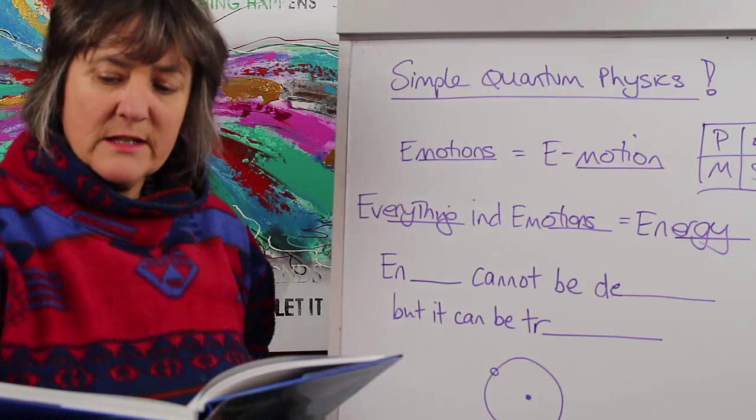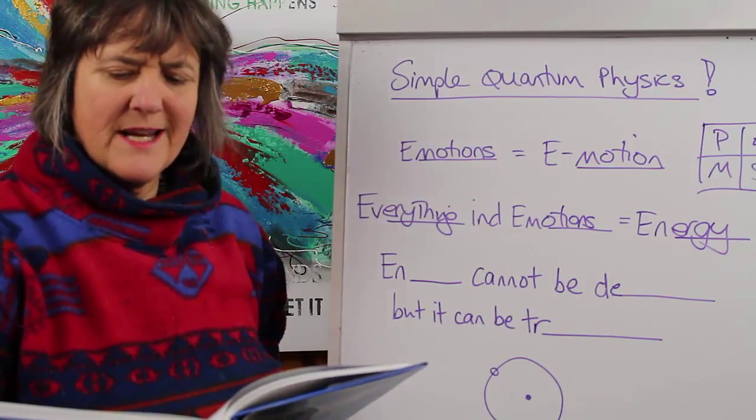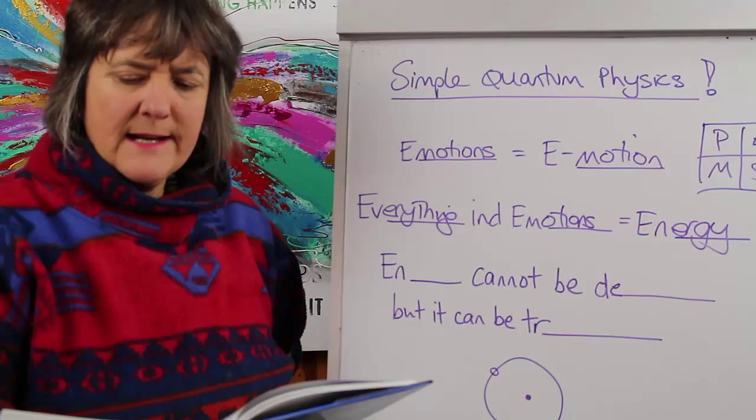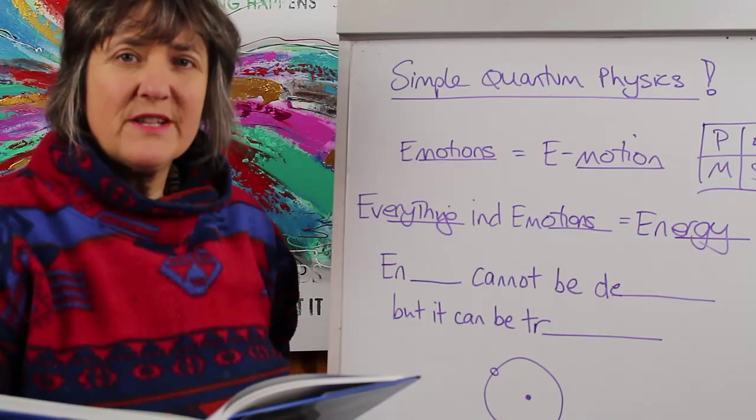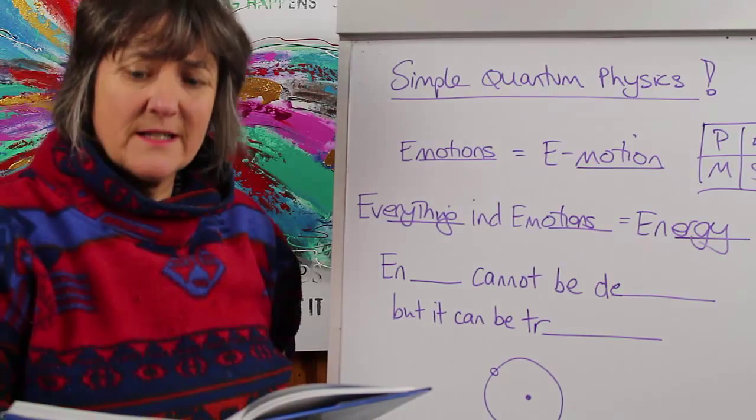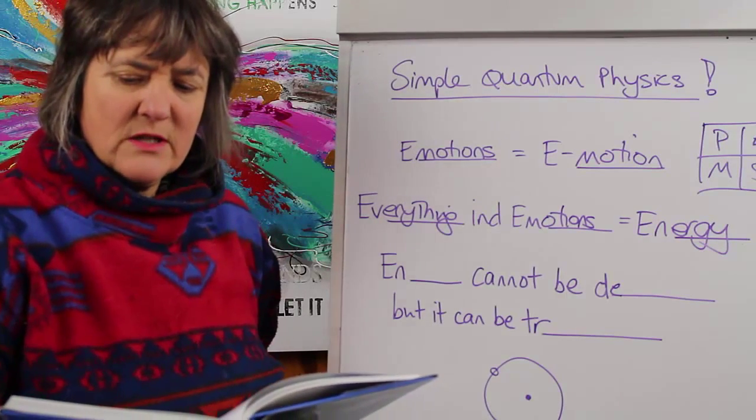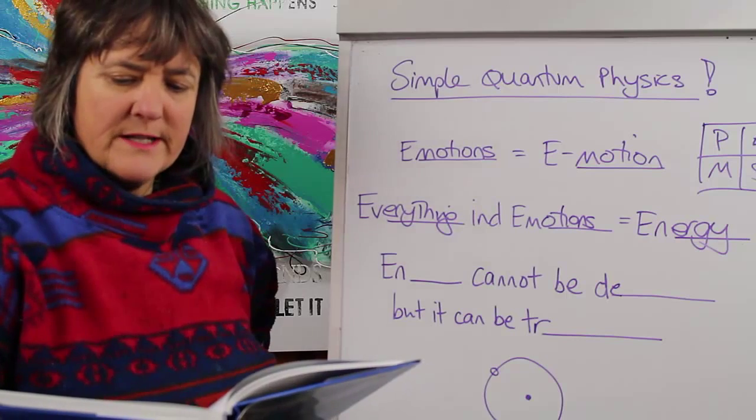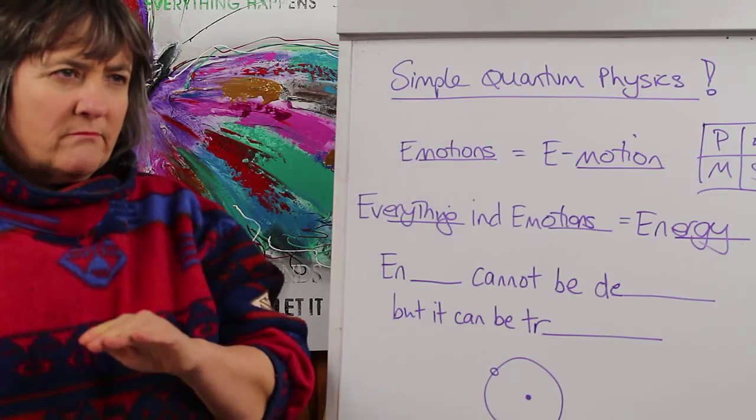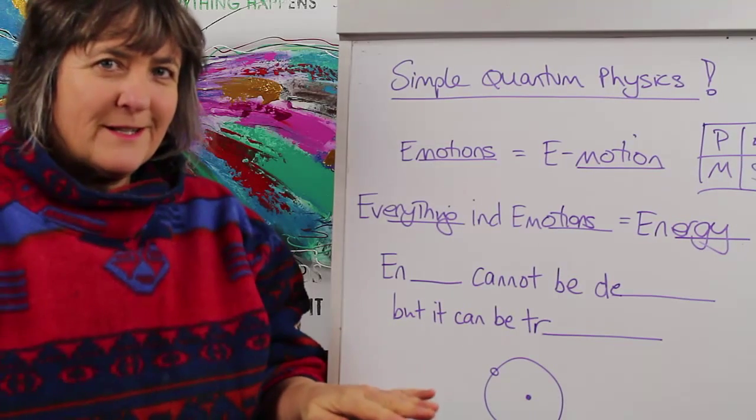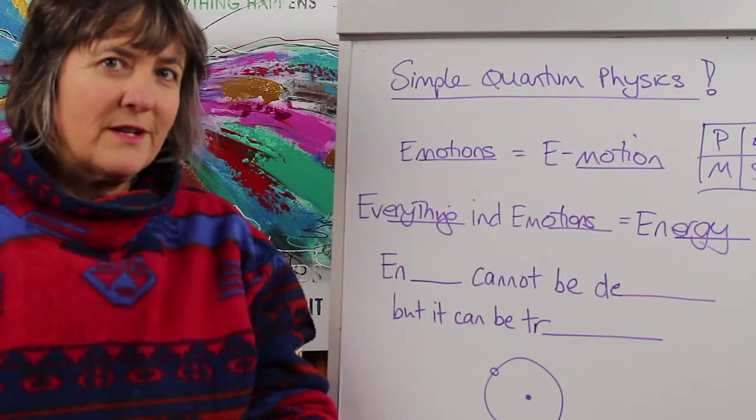As waves, electrons or photons have no precise location but exist as probability fields. As particles, the probability field collapses into a solid object locatable in a specific place in time. So I'll just say that one again. As waves, electrons or photons have no precise location but they exist as probability fields. They exist as a probability. As particles, the probability field collapses into a solid object locatable in a specific place in time.